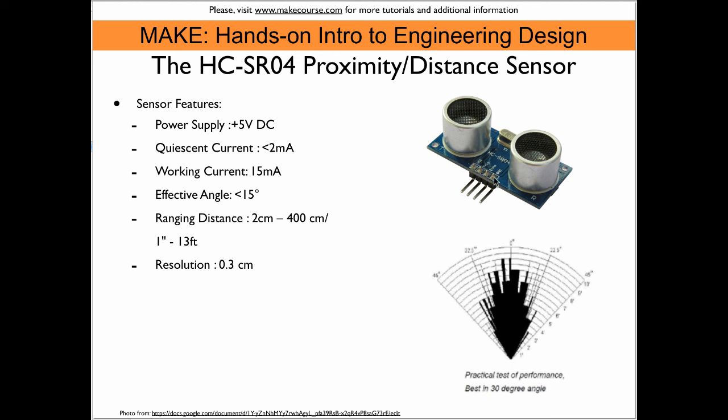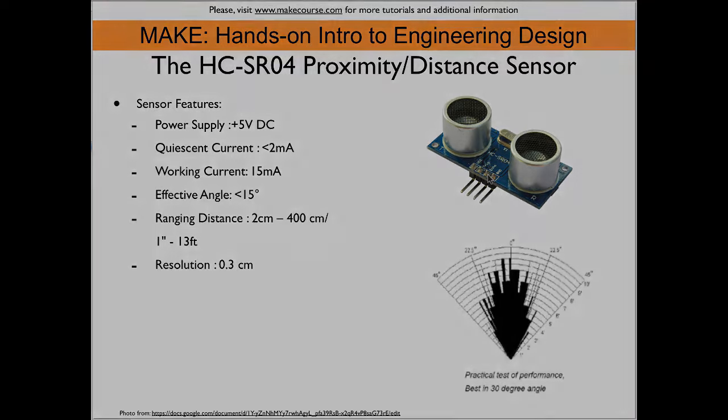On the other end we have the ground connection and then we have two pins. One of them is the trigger pin that allows to start a measurement, and then the third pin here, that is the echo pin that is the pin on which the measurement result is being transmitted to the Arduino.